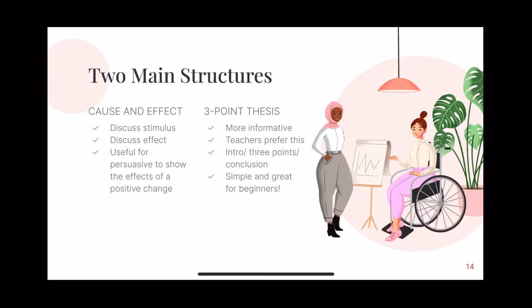For finding and organizing information, there are two main structures you can use: cause and effect, and three-point thesis. In a cause and effect presentation or speech, you discuss stimuluses and their effects. This is typically useful for persuasive presentations, especially if you are trying to show someone the positive effects of a change. The three-point thesis — or even more points — is typically preferred by older grade level teachers and is more informative. Basically, there's an introduction, three points, and then a conclusion. If you're doing a slide presentation, it may have more than three points, and that's perfectly okay. This structure is simple and great for beginners.